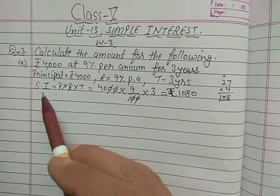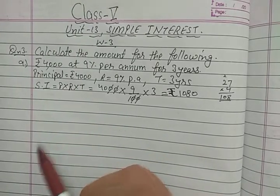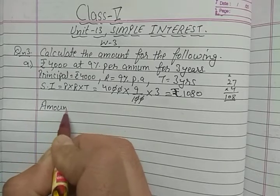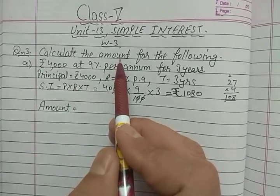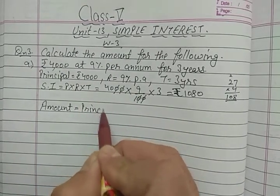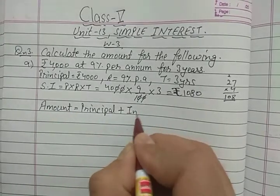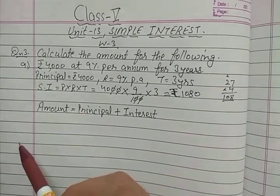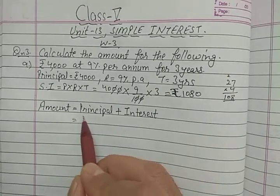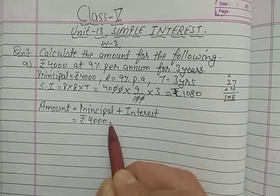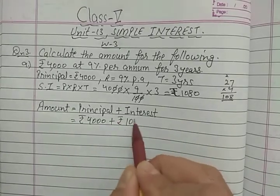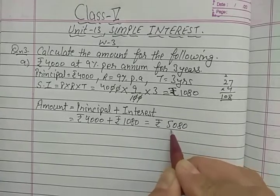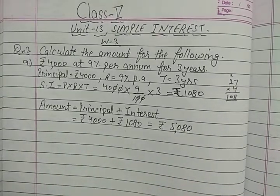Now we have both principal and simple interest. To calculate the amount, the formula is: Amount = Principal + Interest. So Amount = 4,000 + 1,080 = 5,080 rupees. The amount is rupees 5,080. I hope that is clear.